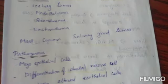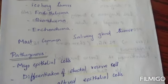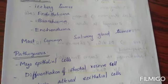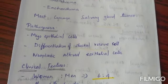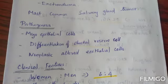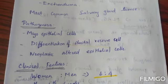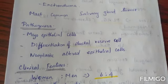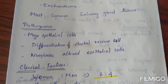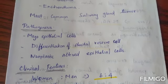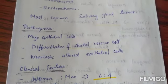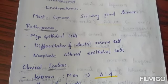Pleiomorphic adenoma is the most common salivary gland tumor. Regarding pathogenesis, it involves myoepithelial cells. The myoepithelial cells are responsible for the morphological diversity of the tumor, including production of fibrous, mucinous, chondroid, and osseous structures.